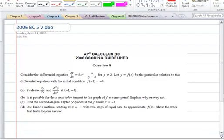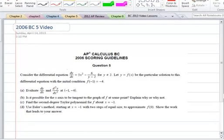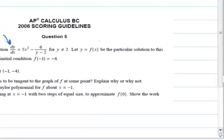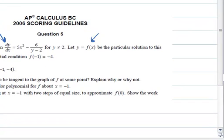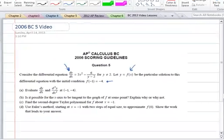It has a little bit of everything for a good review for BC and I just wanted to give you my solution for this. So we start off and we see that we have a differential equation given to us and they tell us that y can't equal 2 otherwise it wouldn't exist. And they said let f of x be the particular solution to the differential equation with the initial condition. With all that they want us to first evaluate dy dx and the second derivative at (-1,-4). So let's go about and do that.